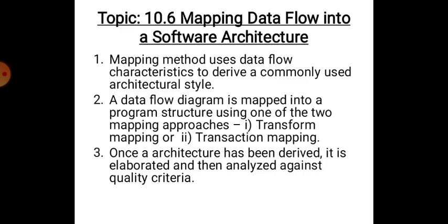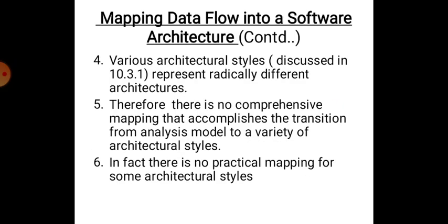Point number three: once an architecture has been derived, it is elaborated and then analyzed against quality criteria. Point number four: the various architectural styles discussed in section 10.3.1 of this chapter represent radically different architectures. We are studying data-centric architecture, call and return architecture, and layered architectures — all totally different architectures.